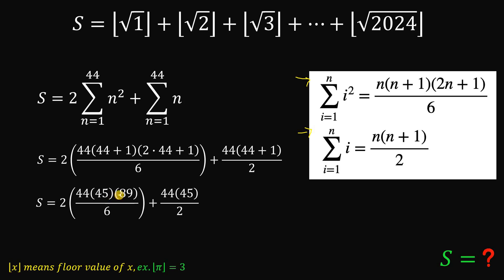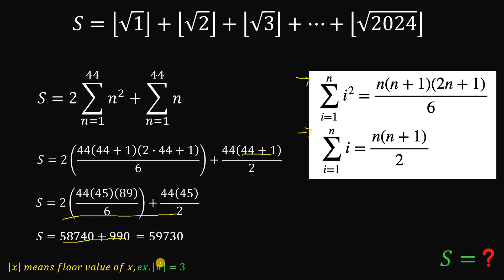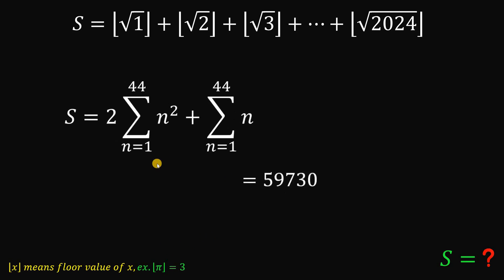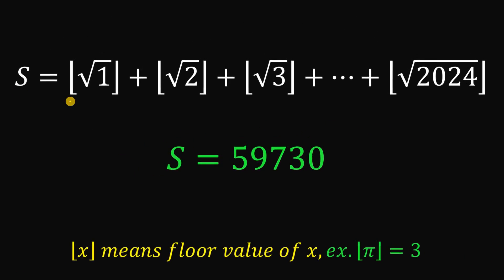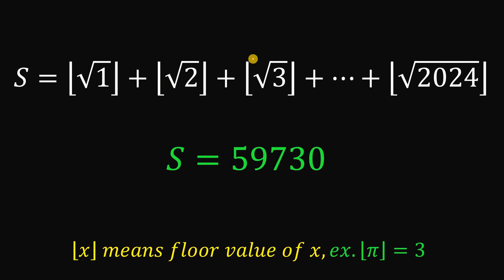Simplifying: 44×45×89/6 gives us 29,370, and multiplying by 2 gives 58,740. And 44×45/2 = 990. Adding those up: S = 58,740 + 990 = 59,730. That's the answer to this question. Therefore, given the equation S equals the floor of square root of 1 plus floor of square root of 2 plus floor of square root of 3, all the way to floor of square root of 2024, the value of S is 59,730.